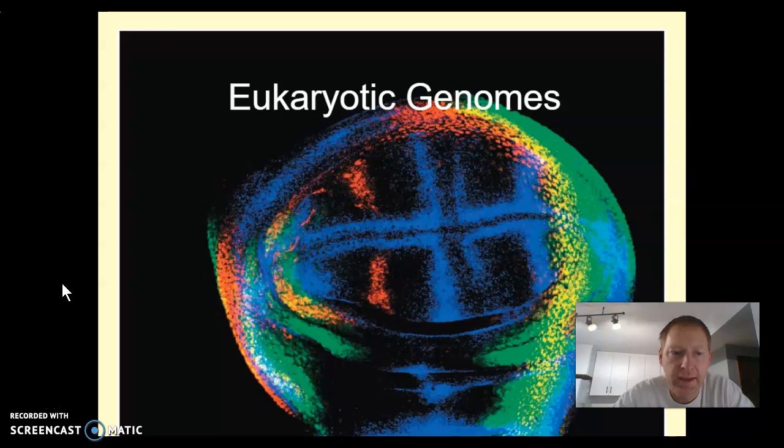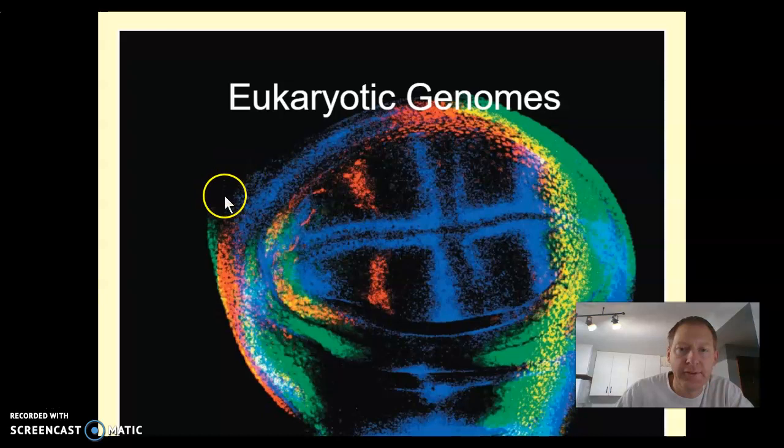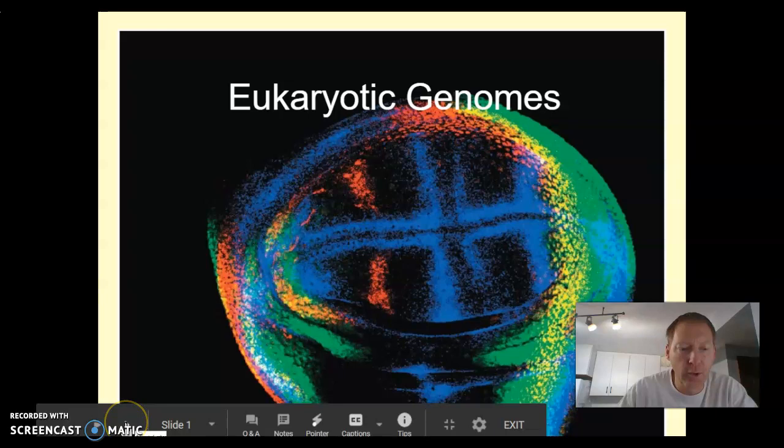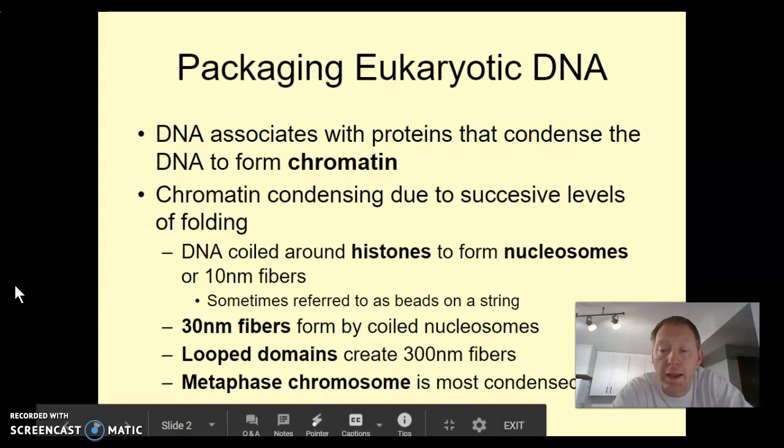Welcome everybody to our AP Bio lesson for today. I'm hoping I can get this one done in one video. We're going to talk a little bit about eukaryotic genomes today. This is part of chapter 15 — I went out of order and jumped around a little bit, but we'll get started.